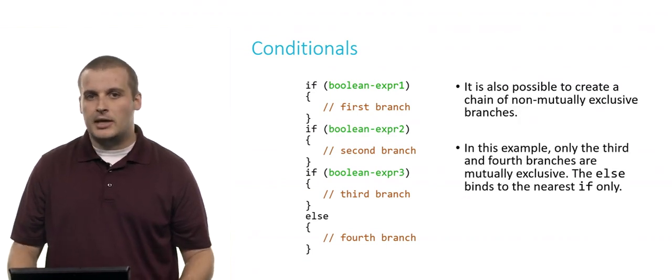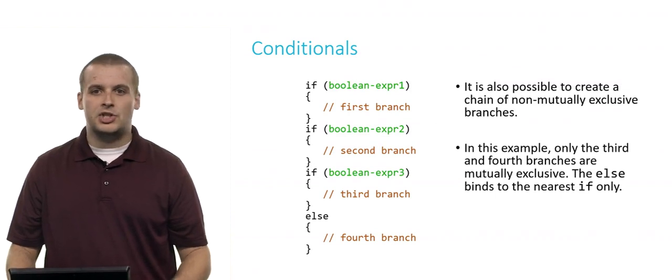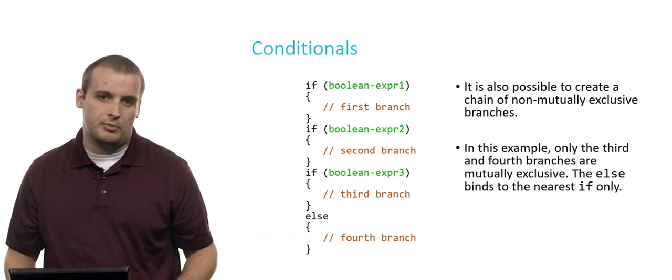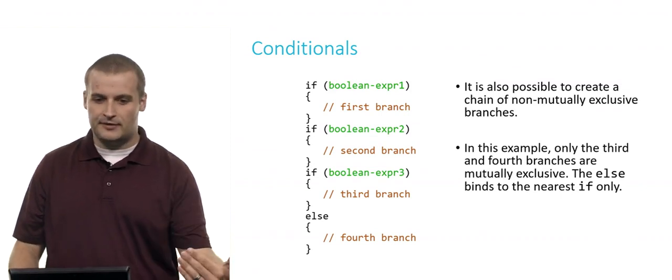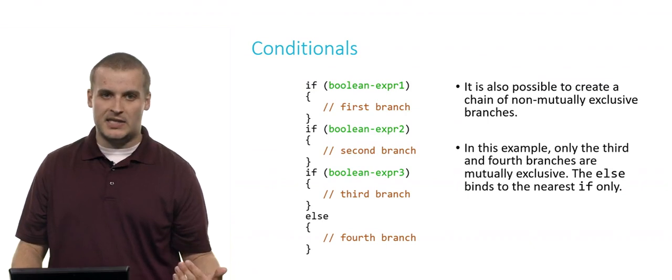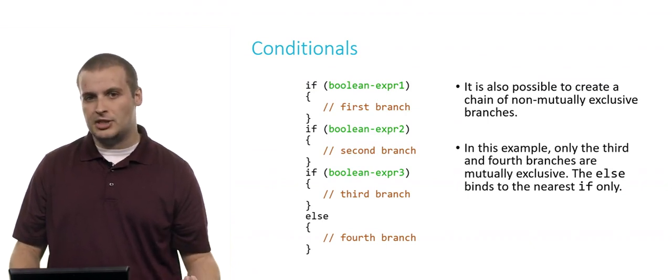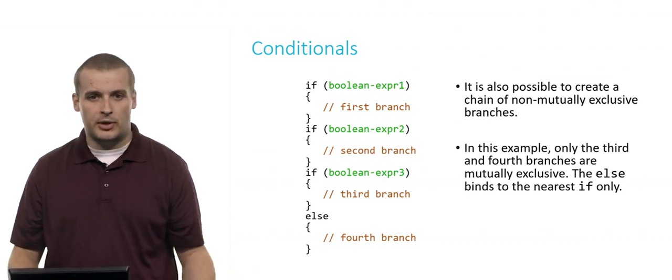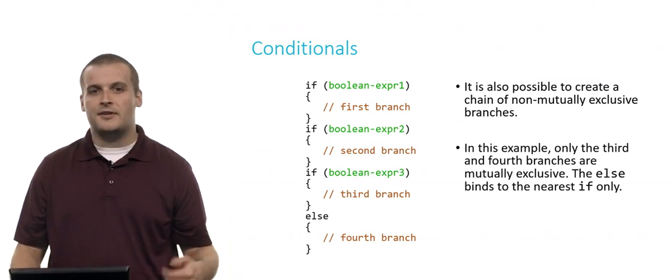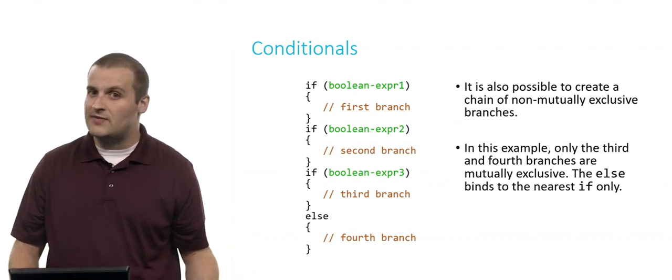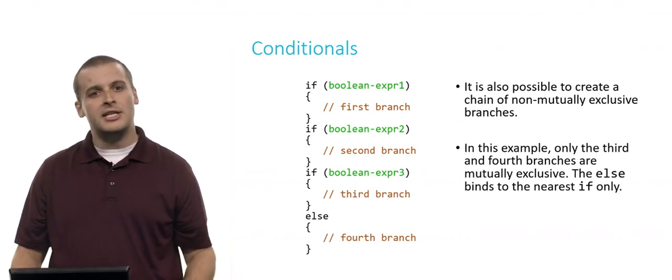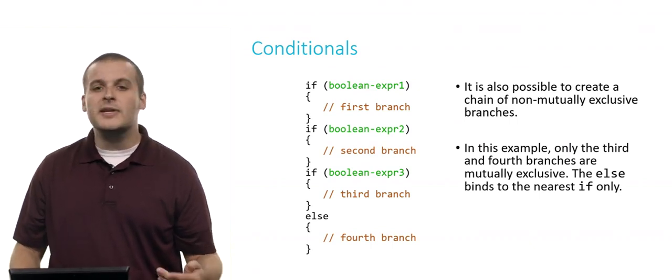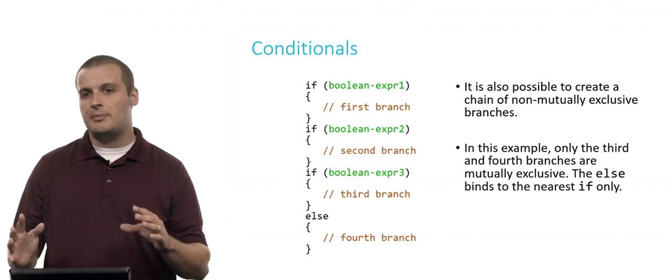It is possible, though, and sometimes very useful, to create a chain of not mutually exclusive branches. In this example, only the third and fourth branches are mutually exclusive. It could be that you could satisfy the first condition and the second condition and the third condition, in which case you would go down the first branch, then the second branch, then the third branch. Or perhaps you satisfy the first condition and the second condition, but you don't satisfy the third condition. In this case, you go down the first branch and the second branch and then the fourth branch.